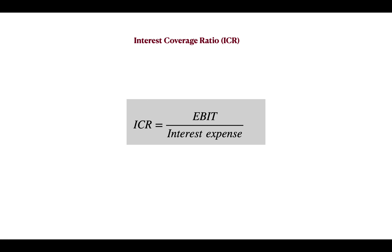Today we will look into an important financial ratio called the Interest Coverage Ratio, or ICR. This is a measure of solvency for a company and it indicates how easily a company can pay the interest on its outstanding debt for a period of time. This ratio is calculated by dividing a company's earnings before interest and taxes (EBIT) by its interest expense. It is also known as Times Interest Earned, or TIE, as it indicates how many times your interest payment you are actually earning.